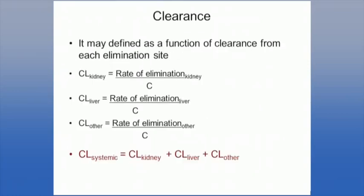You have to eliminate drugs from multiple different sites, so there will be a rate of elimination from the kidney, liver, lung, muscle, and whatever other sites the drug was distributed to. These individual components must all be considered when calculating the overall clearance — referred to as systemic clearance. So systemic clearance is the combination of kidney clearance, liver clearance, and other sites of clearance.